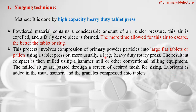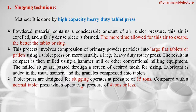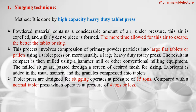After granule formation, lubricant is added by blending and the granules are compressed into final tablets. The tablet press designed for slugging operates at a pressure of 15 tons. When compared with the normal tablet press, which operates at 4 tons or less, these heavy duty rotary presses operate at a much higher pressure.